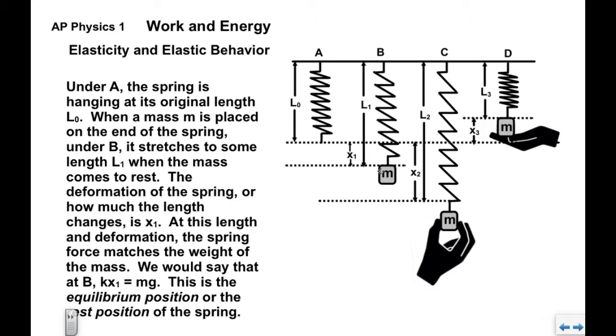At this length, if we consider the mass, it's in equilibrium. Spring force is pulling up with a magnitude equal to k times x sub one, and then the weight of the mass mg is pulling down. We would say that at point, under situation B where it's at rest, kx one equals mg. This is what we might call the equilibrium position or the rest position of the spring with this mass on it.